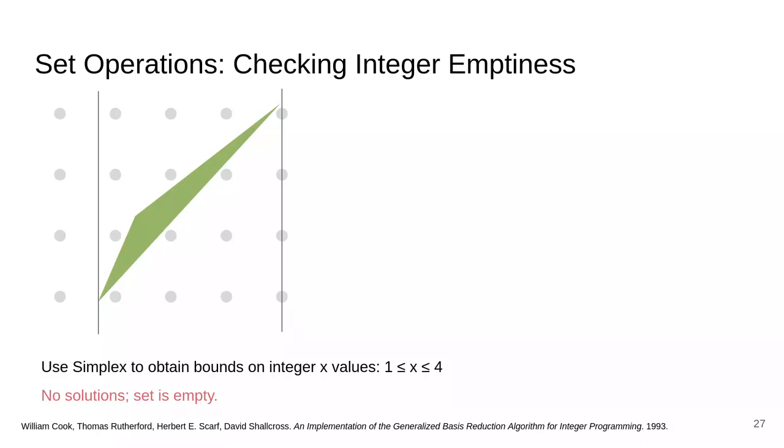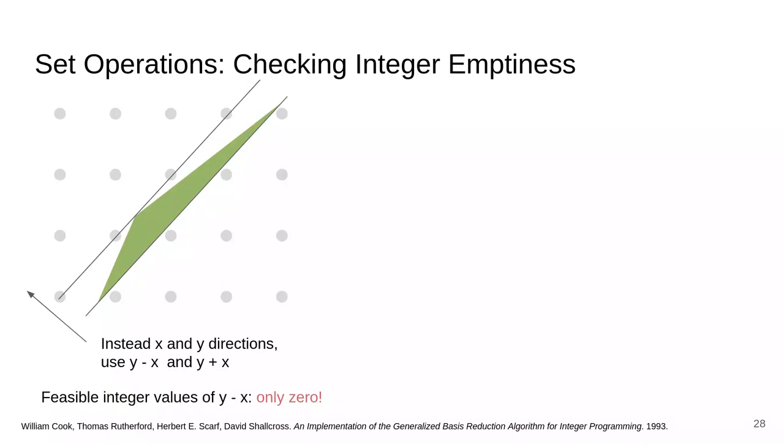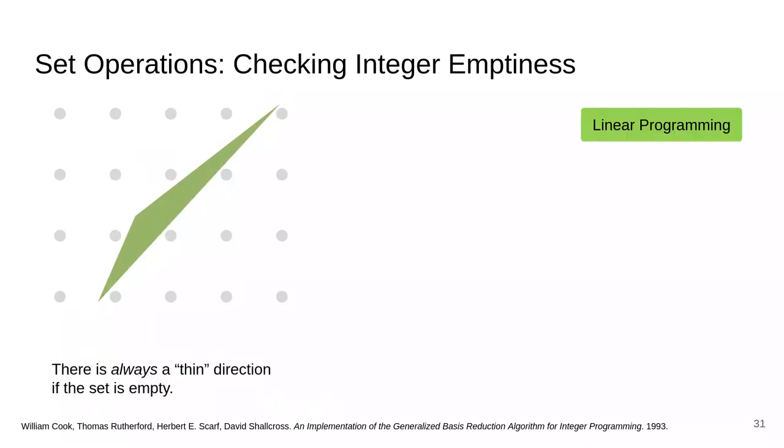However, note that this algorithm might be very expensive if it turned out that the set is very long along the x direction. However, we can see that there is a direction along which the set is short, and if we had instead computed the possible range of values of y - x, we would have found only one possible integer value, and we would immediately be done. In fact, there is a theorem that there is always such a thin direction if the set is empty. We use the generalized basis reduction algorithm to find such thin directions.